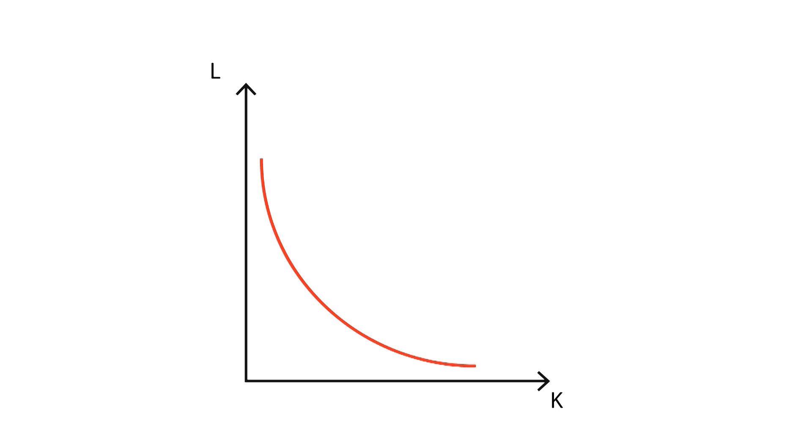The shape of the curve shows what amount of capital the producer can stop applying when increasing the amount of labor, while maintaining the quantity of output produced constant.